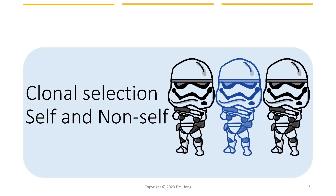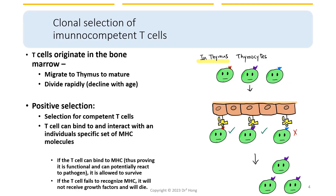We will begin this lecture by first revisiting the concept of clonal selection, and how it helps to ensure T cells can distinguish self and non-self. Remember, T cells, like other white blood cells, originate in the bone marrow, but unlike others, they migrate to the thymus as immature thymocytes and mature in the thymus. In the thymus, T cells get selected to make sure they can interact with self-MHC molecules.